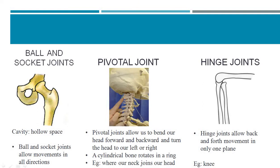The pivotal joint is present beneath your head, between the first two vertebrae. The head and the first two vertebrae are joined by the pivotal joint, and it is the joint which allows our head to turn left and right or forward and backward.